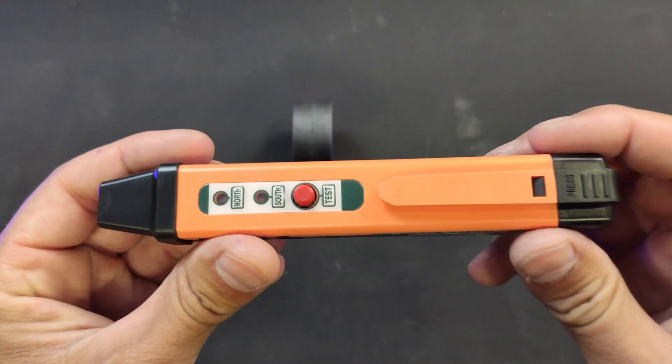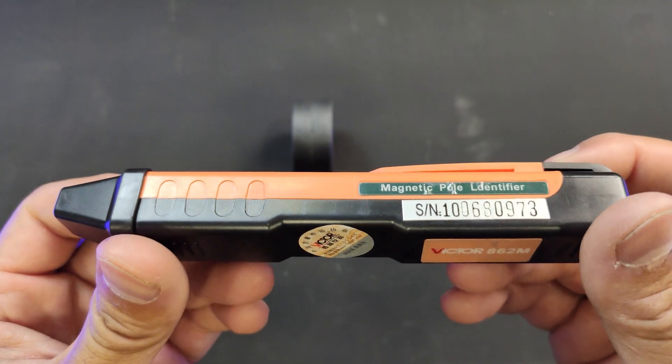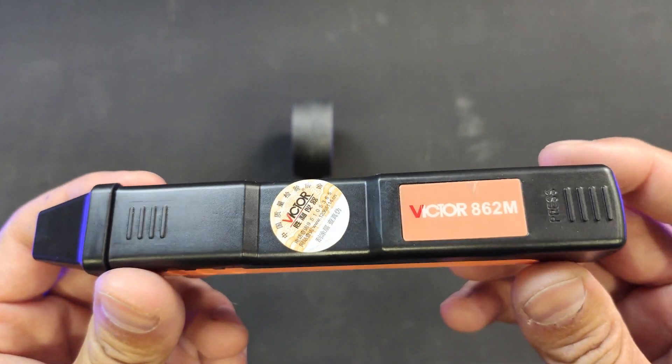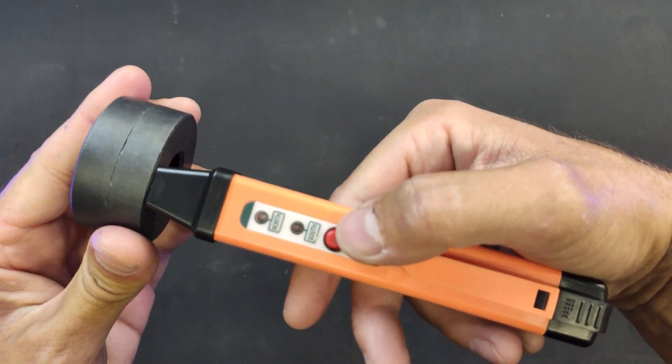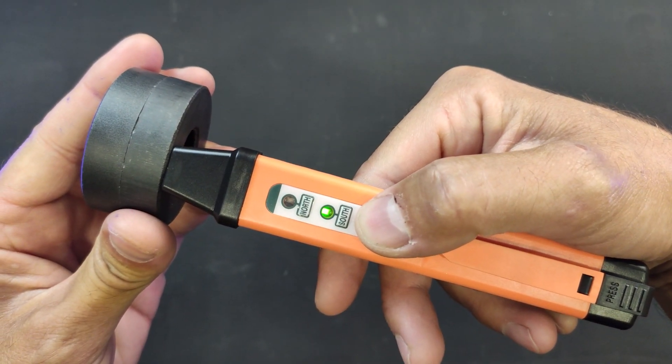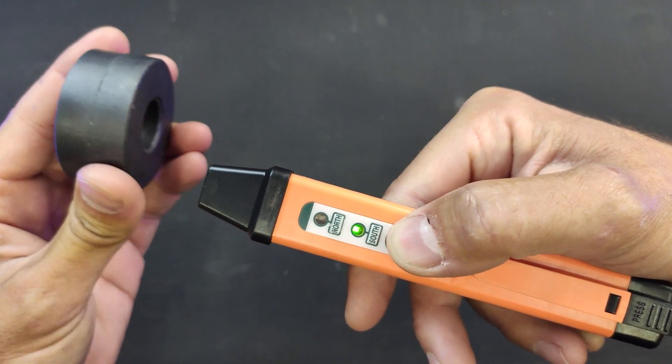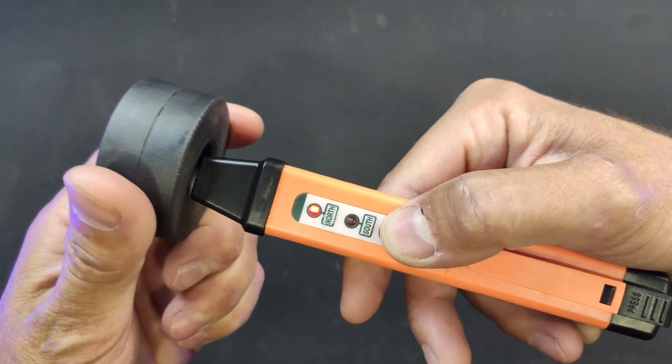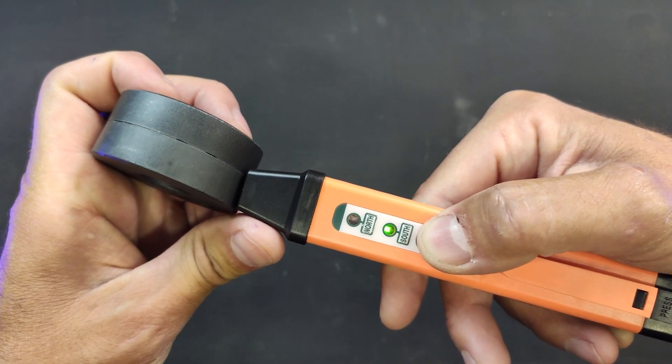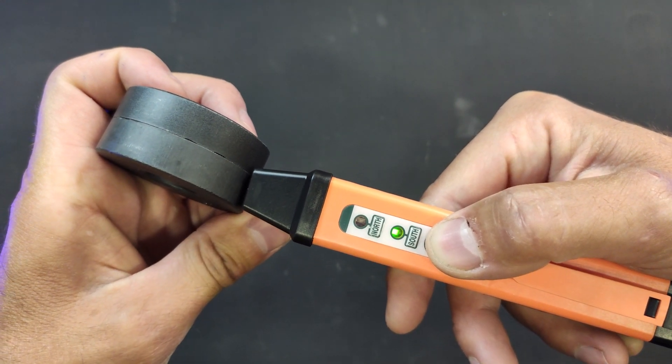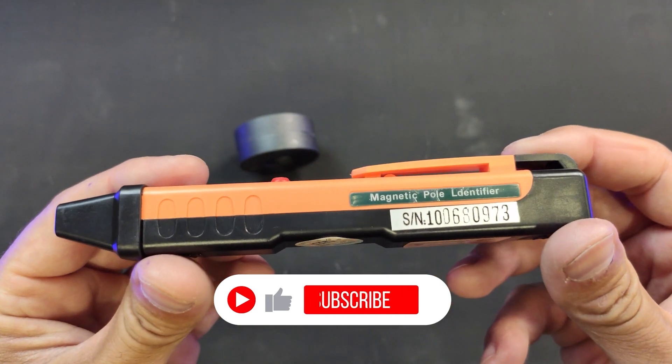We will now use this magnetic pole identifier. Link in the description. Magnets are naturally bonded together. You can find this meter in a link in the description.